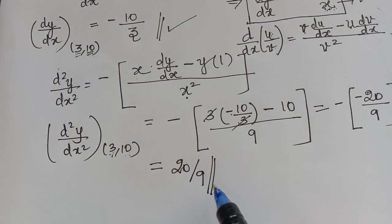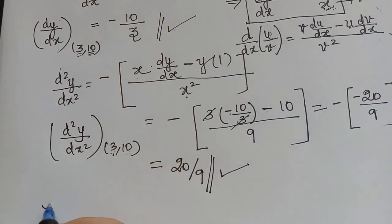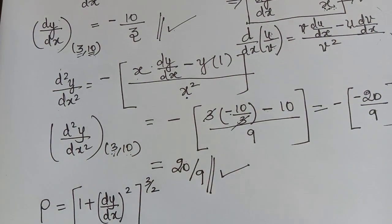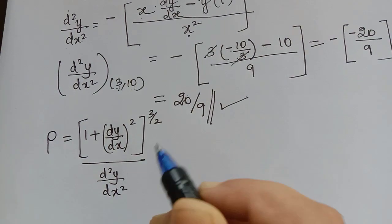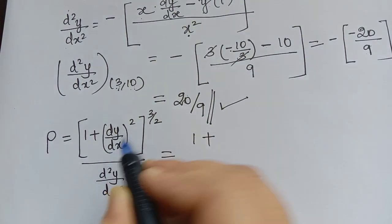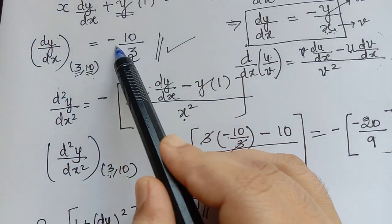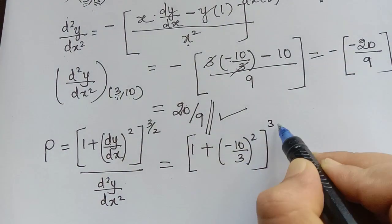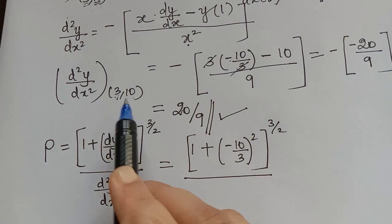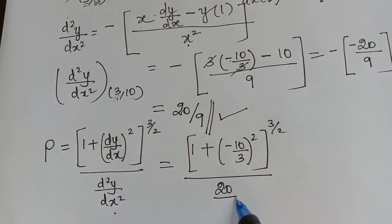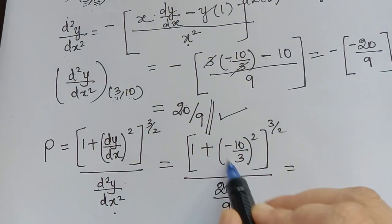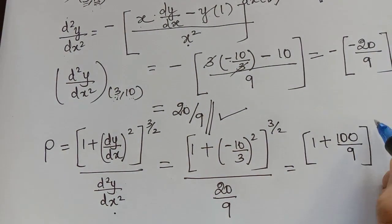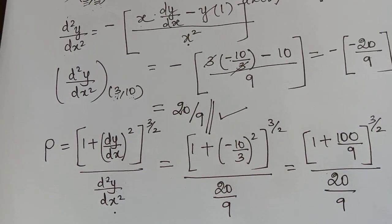Now substitute into the radius of curvature formula: rho = (1 + (dy/dx)²)^(3/2) / (d²y/dx²). Substituting dy/dx = −10/3 and d²y/dx² = 20/9, we get rho = (1 + (−10/3)²)^(3/2) / (20/9) = (1 + 100/9)^(3/2) / (20/9).